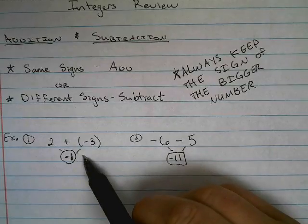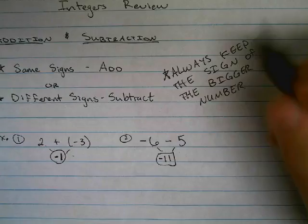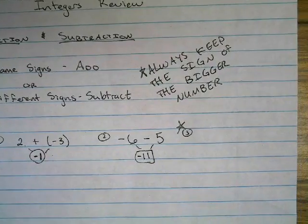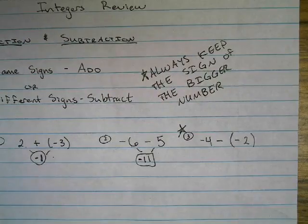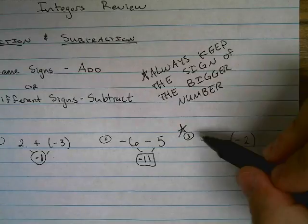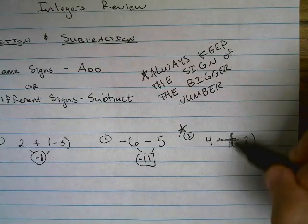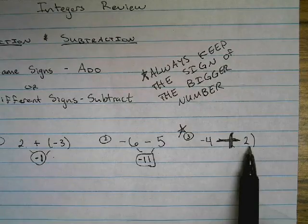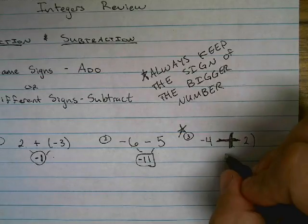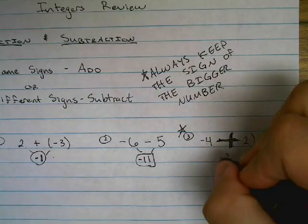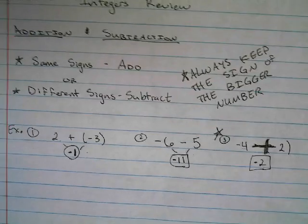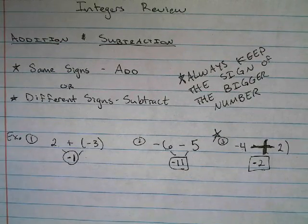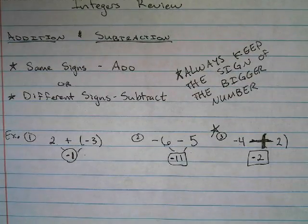Number 1: different signs subtract. Number 2: same signs add. Number 3 is our special case — when we have minus and minus. Say I had negative 4 minus negative 2. This is the special one where if I have minus and minus, I can turn that into a big plus sign, eating up those negatives. So I end up with negative 4 and positive 2 — different signs, so different signs subtract. Keep the sign of the larger number, so I keep the negative from the 4. That's our addition and subtraction rules: same signs add, different signs subtract, always keep the sign of the bigger number, and don't forget about the double negative becoming a plus.